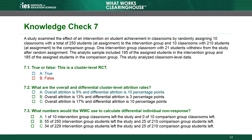The correct answer is A. The unit of assignment is the classroom. For overall attrition, the study assigned 20 classrooms and 19 contributed outcome data. Thus, overall attrition is (20 minus 19) divided by 20, or 5%. For differential attrition, intervention group attrition is 10%, calculated as (10 minus 9) divided by 10. Comparison group attrition is zero since no comparison classrooms left the sample. The differential attrition rate is the difference between the two, or 10 percentage points.